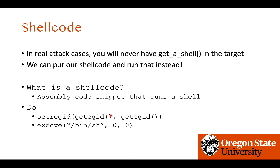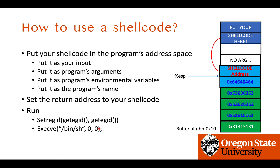To illustrate how we use the shellcode, here is a conceptual diagram. Because there is no get_shell function, we will put our shellcode somewhere in the program's memory. That could be in your input — in that case the shellcode would be placed starting from the buffer — or in program arguments, environmental variables, or the program's name, which are located in the upper part of the stack. We will learn about how to put the shellcode in the next lecture on Tuesday. After putting the shellcode on the stack or somewhere in memory, we can override the return address with the address of the shellcode.